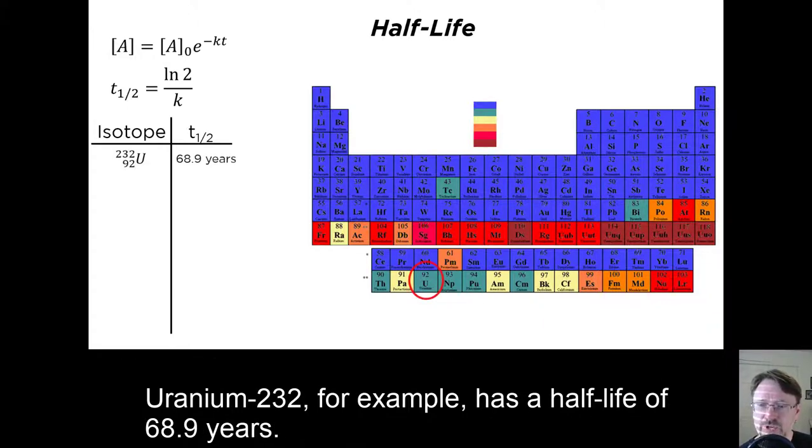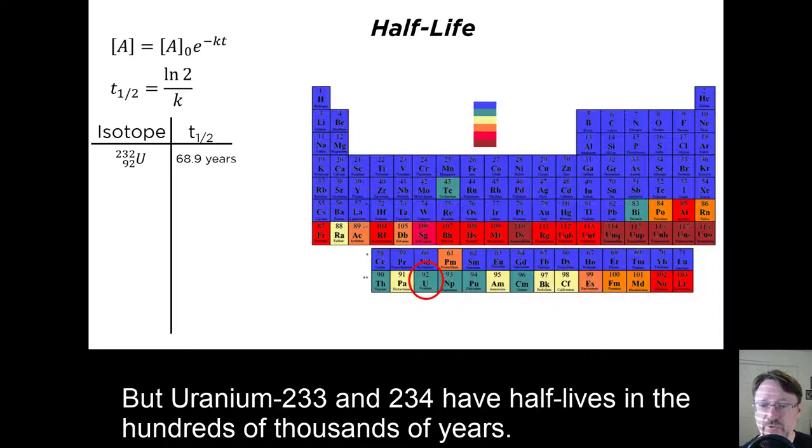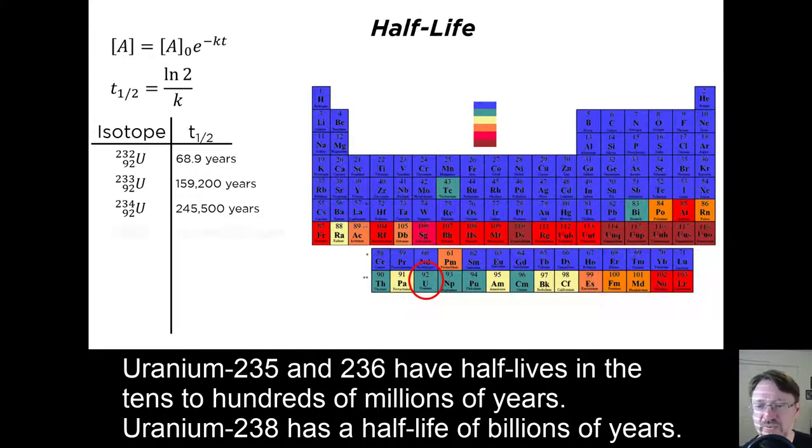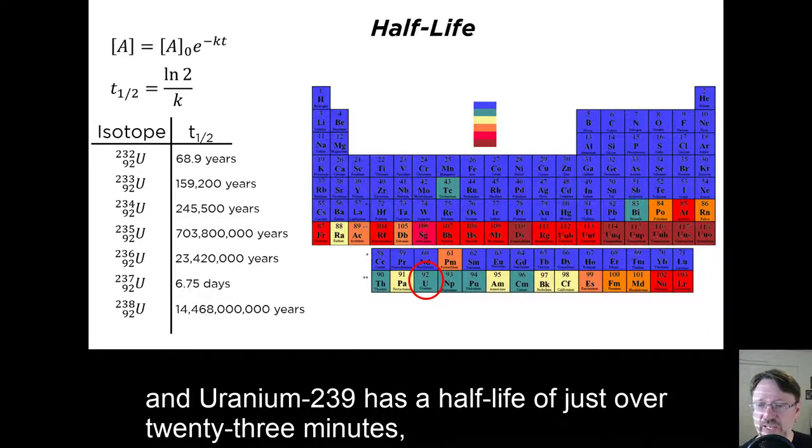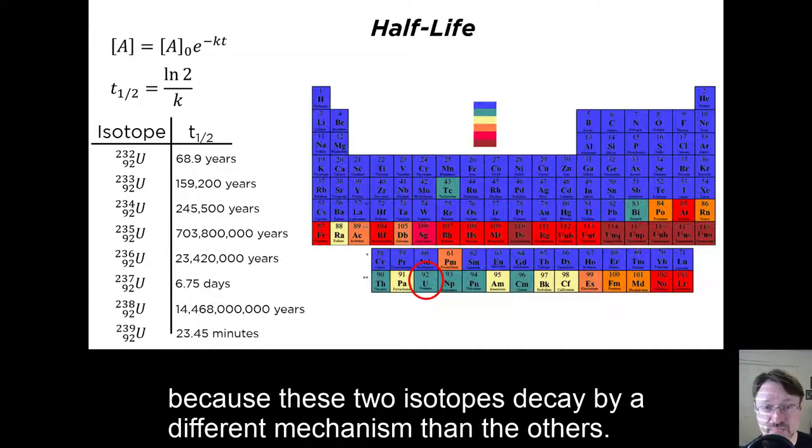Uranium-232, for example, has a half-life of 68.9 years, but Uranium-233 and 234 have half-lives in the hundreds of thousands of years. Uranium-235 and 236 have half-lives in the tens to hundreds of millions of years. Uranium-238 has a half-life of billions of years. Amazingly, by comparison, Uranium-237 has a half-life of only six and three-quarter days. Uranium-239 has a half-life of over 23 minutes, because these two isotopes decay by a different mechanism than the others.